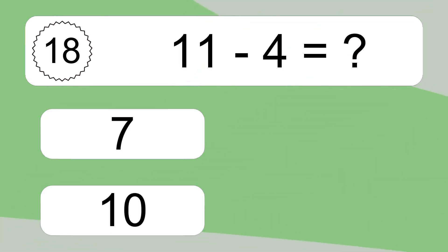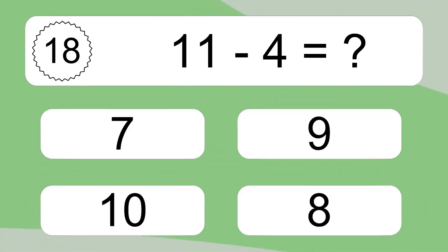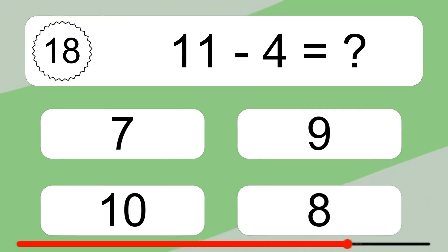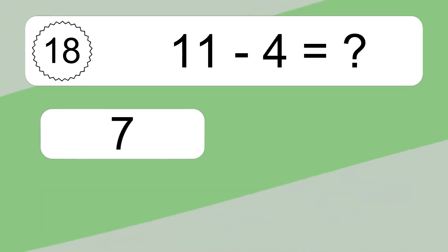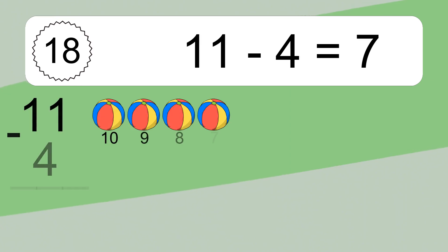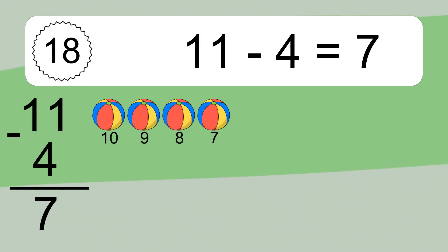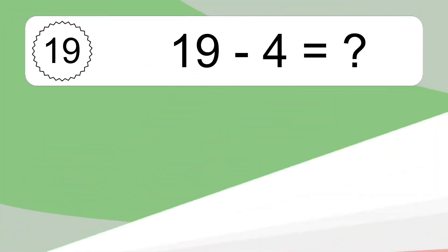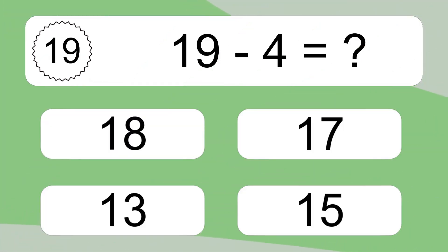11 minus 4 equals what? 11 minus 4 equals 7. Let's count it: 10, 9, 8, 7.